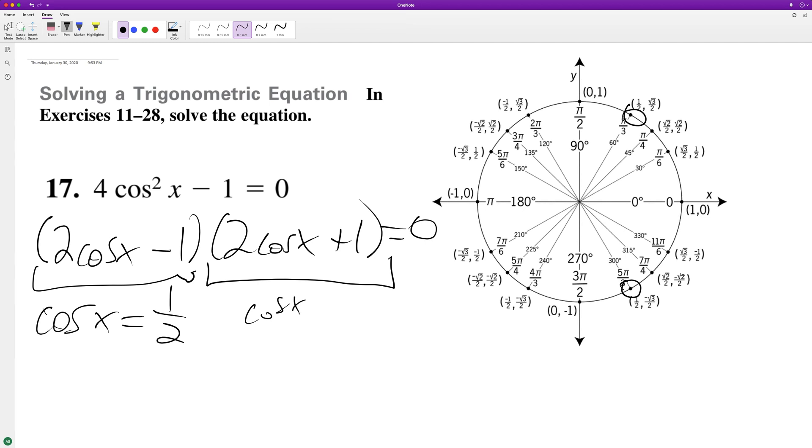This is cosine of X is equal to negative one half. And that's true at two pi over three and four pi over three.